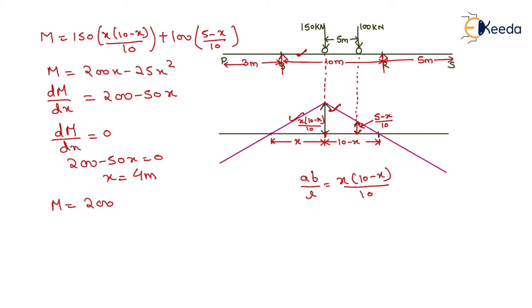We substitute this value in the M equation and get the maximum sagging moment as 200(4) - 25(4²). After solving this, we get the moment as 400 kN·m. This is the maximum sagging moment under the 150 kN load, which is at a distance of 4 meters from support Q.